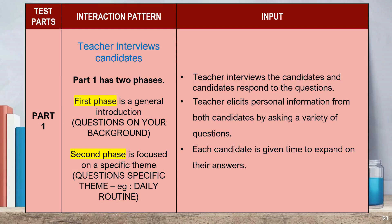In Part 1, the teacher interviews the candidates individually, although they are seated in pairs. Part 1 has two phases. The first phase is a general introduction — the questions are basically about the candidate's background. In the second phase, the task is focused on a specific thing like daily routine. In both phases of Part 1, the teacher interviews the candidates and candidates respond to the questions. The teacher elicits personal information from both candidates by asking a variety of questions, and each candidate is given time to expand on their answers.